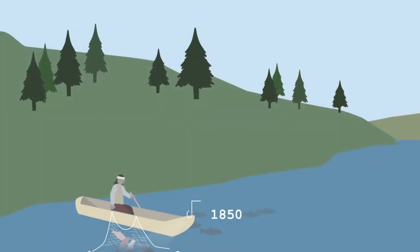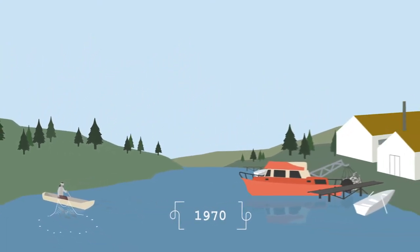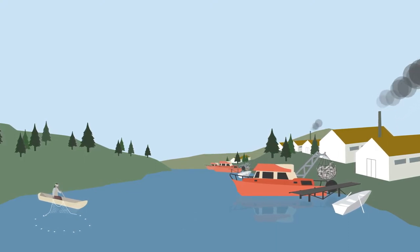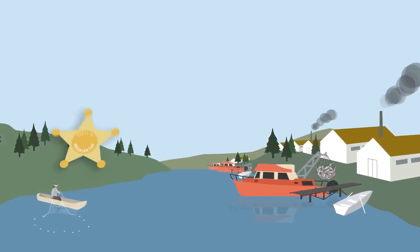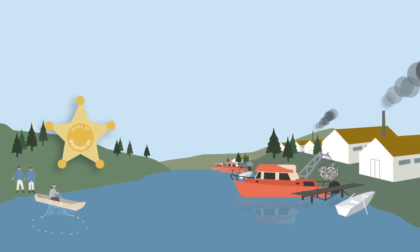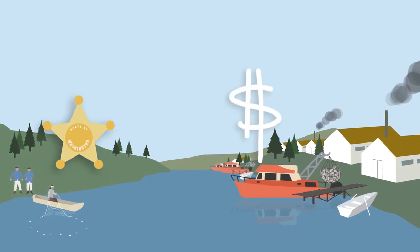That was in the 1850s, and between then and the 1970s, everyone else discovered how amazing salmon are. They were harvested on an industrial scale. State authorities began illegally restricting how and where tribes could fish, making sure the resource was still a cash cow for non-tribal commercial and recreational fisheries.